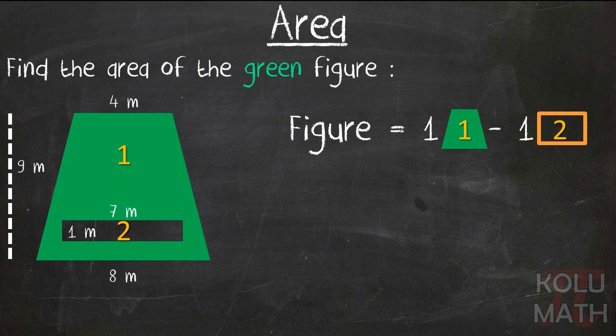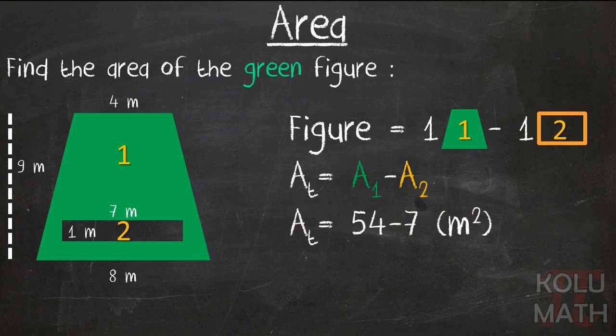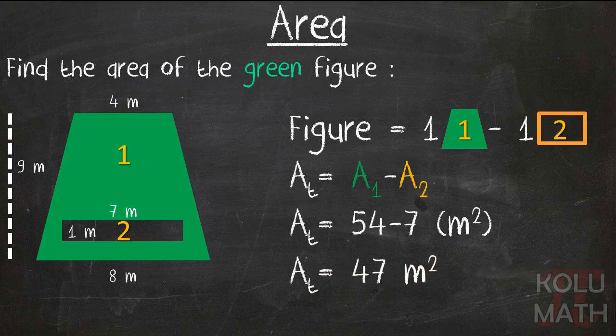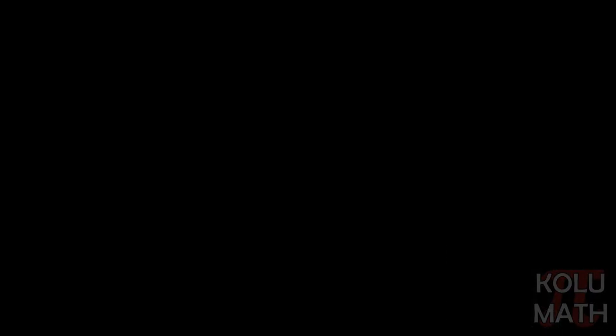Let's try it out. So the area of the trapezoid minus the area of the rectangle is going to give us the area of the figure. Okay. So 54 minus seven gives us 47 meters. All right. This is normally where we do the stretch it question.